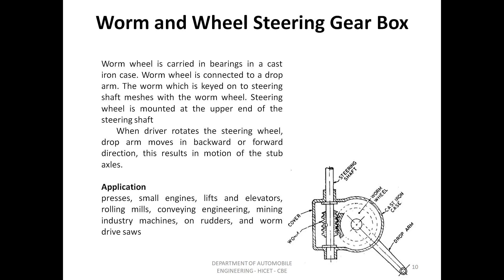Worm and wheel steering gear: The worm wheel is carried in bearings in a cast iron case. The worm wheel is connected to a drop arm and to a steering shaft. The worm wheel is mounted at the upper end of the steering shaft. When the driver rotates the steering wheel, the drop arm moves in a backward or forward direction, which results in motion of the stub axles. The worm wheel is connected to the steering wheel.